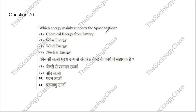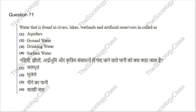Question 70: Which energy mainly supports space stations? Options: chemical energy from battery, solar energy, wind energy, or nuclear energy. The correct answer is B — solar energy. Question 71: Water found in rivers, lakes, wetlands and artificial reservoirs is called what? Options: aquifers, groundwater, drinking water, or surface water. The correct answer is D — surface water. Please remember.